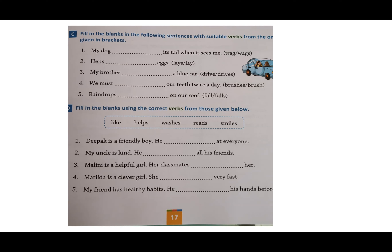You have to read the sentence and choose the correct one. First: my dog dash its tail when it sees me. The options given are wag or wags. Remember the rule: when we talk about one person or thing, meaning the subject is singular, the verb takes an S. So the correct answer is: my dog wags its tail when it sees me.